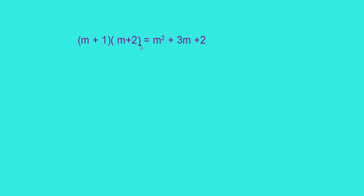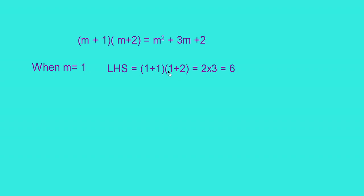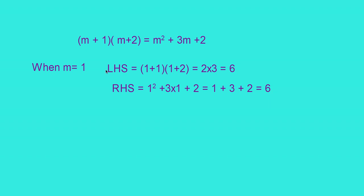Consider the equality m plus 1 into m plus 2 equals m squared plus 3m plus 2. When m equals 1, the LHS is 1 plus 1 into 1 plus 2, that is 2 into 3 equals 6. The RHS is 1 squared plus 3 into 1 plus 2, which is 1 plus 3 plus 2, again 6. So when m equals 1, this equality becomes true.